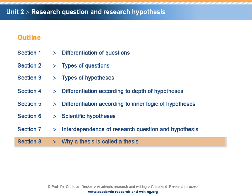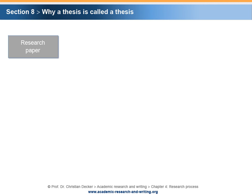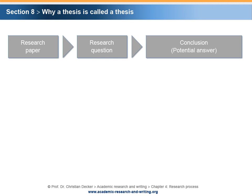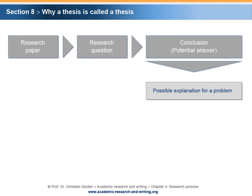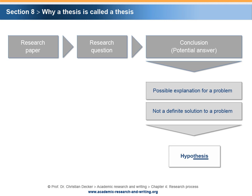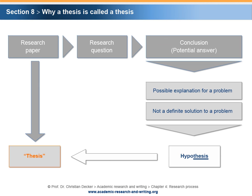Why is a thesis called a thesis? In your research paper, you will raise a research question. At the end of your research paper, you have to provide a conclusion — or in other words, a potential answer for a given research question. It is a possible explanation for a problem, and not a final or definite solution to a problem at hand. In other words, your conclusion is only a hypothesis that can be supported or falsified by further research work. Hence, the research paper is called a thesis.